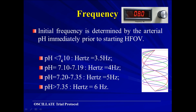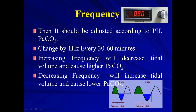It's not evidence-based, but it's a physiological start based on the concept that when we increase the frequency, we decrease CO2 removal. Frequency should be adjusted according to pH and PCO2; we can change the hertz every 30 to 60 seconds by 1 Hz, and repeat ABG after 1 hour of starting high frequency. Increasing frequency will decrease tidal volume and cause higher PCO2. Decreasing frequency will increase tidal volume and cause lower PCO2. This is the opposite of conventional mechanical ventilation, where you increase the rate to wash out CO2. Here, if the patient has high CO2, you decrease the frequency to wash it out.